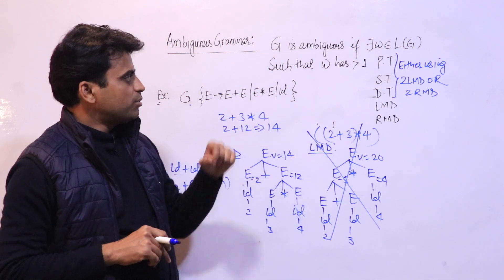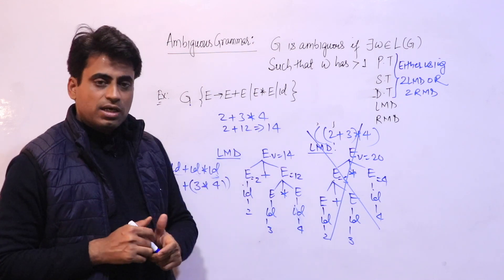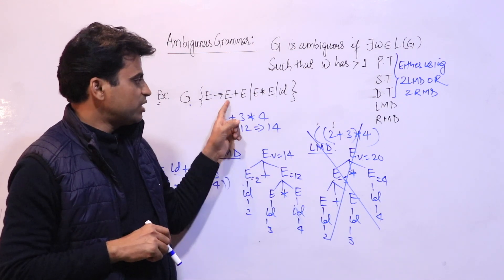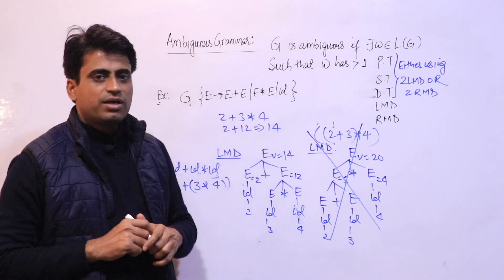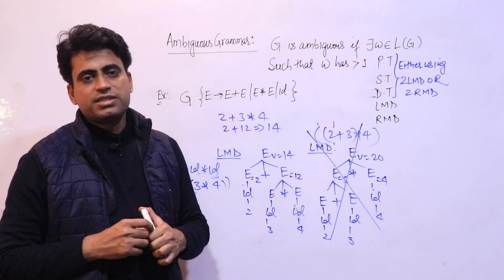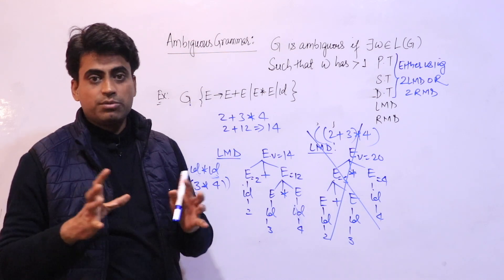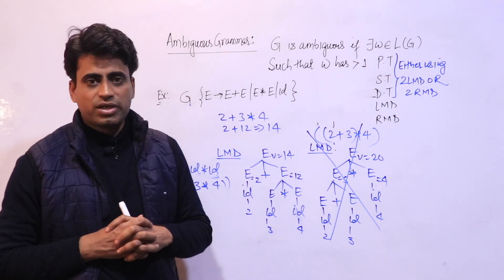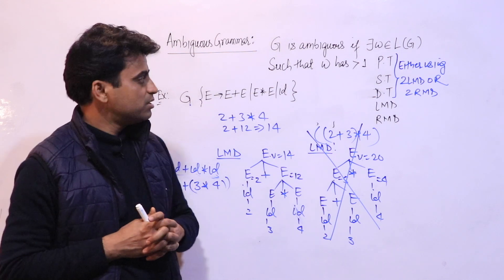So ambiguous grammar kya hota hai — agar kisi grammar ke corresponding language mein agar ek bhi sentence hai jiske liye multiple parse trees generate ho rahe hain (more than one parse tree), to grammar ambiguous hai.